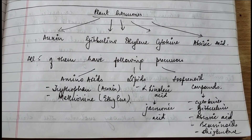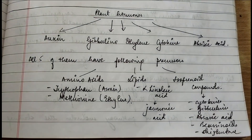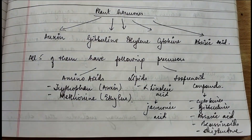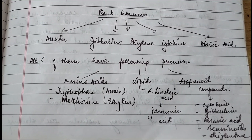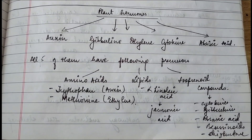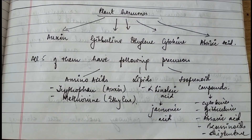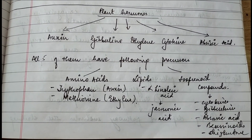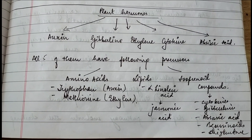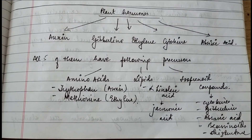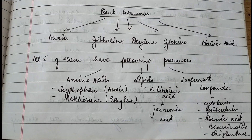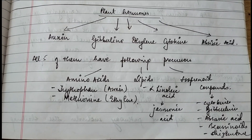Plant hormones are basically five types: auxin, gibberellins, ethylene, cytokinins, and abscisic acid. All of them have certain precursors — common starting materials which are present across all plant hormones.